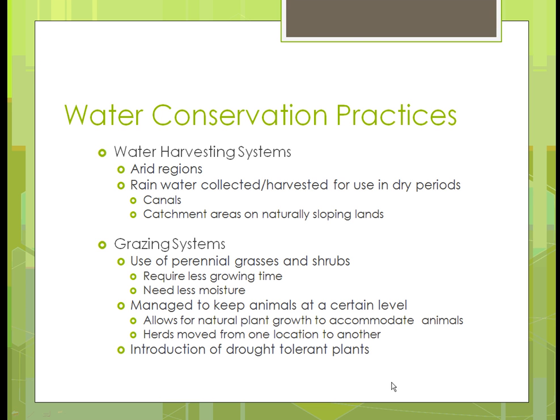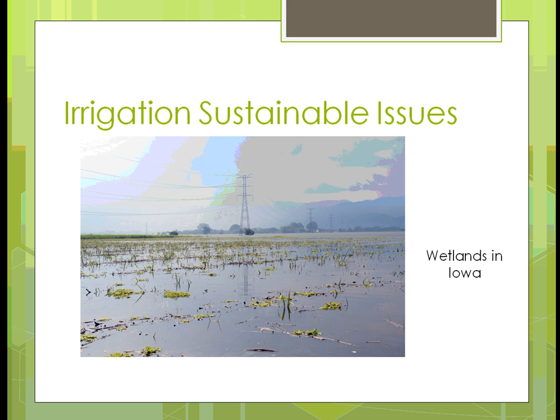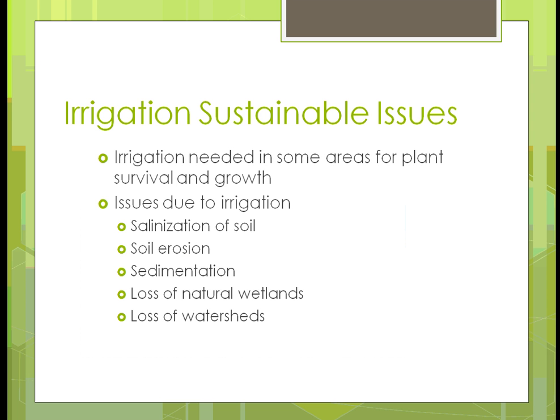They also put in drought-tolerant plants in areas where water conservation is important — plants you don't have to worry about in terms of how much water they use. Here's a picture of some wetlands in a wet period.